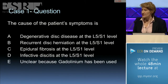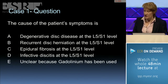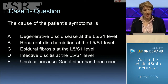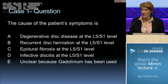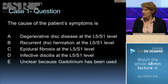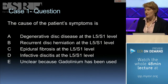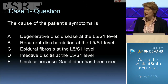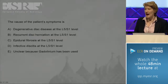And the question is: the cause of this patient's symptoms is — degenerative disc disease at the L5-S1 level, recurrent disc herniation at the L5-S1 level, epidural fibrosis at this level, infective discitis at this level, or it's unclear because gadolinium has been used. Please vote now.